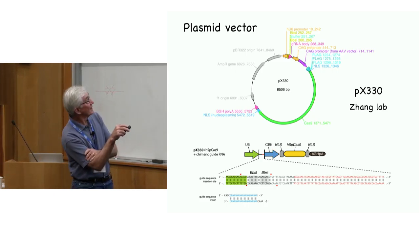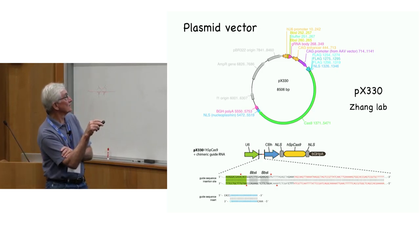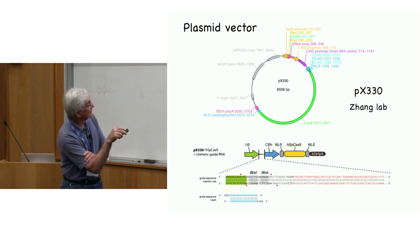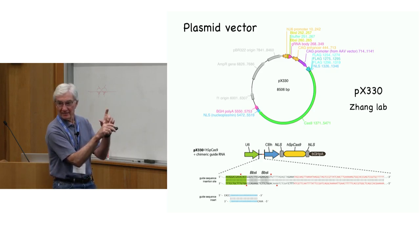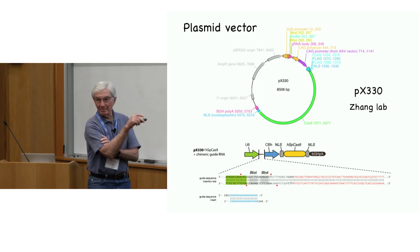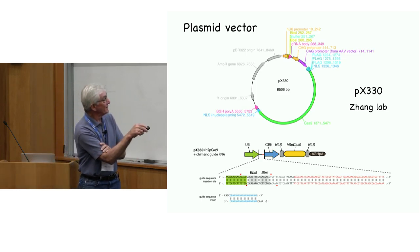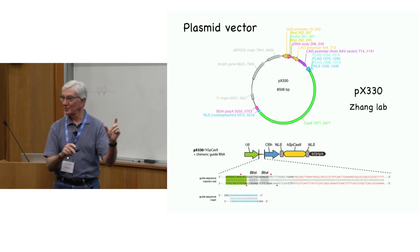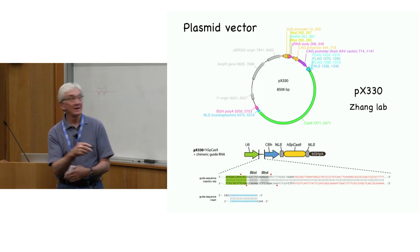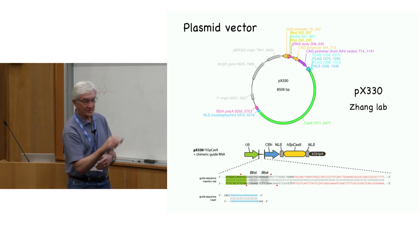This is a standard plasmid propagated in bacteria and introduced into cultured mammalian cells. It has a Cas9 gene with nuclear localization signals and a promoter, plus an RNA polymerase III promoter to drive guide RNA expression. The three prime backbone of the guide RNA is constitutively in the vector, and there's a small sequence that can be cut out with a restriction enzyme and replaced with your approximately 20 nucleotide guide sequence using a pair of cheap synthetic oligonucleotides.